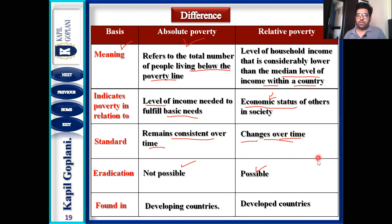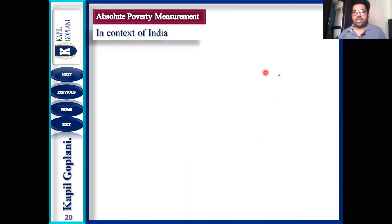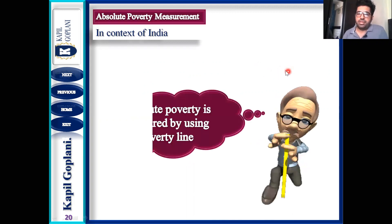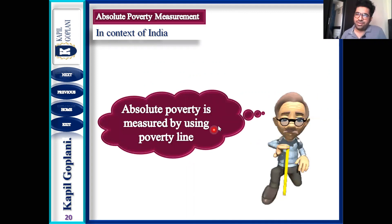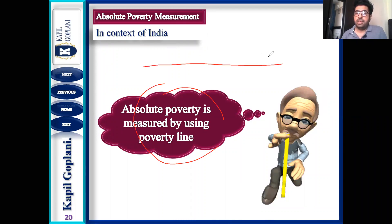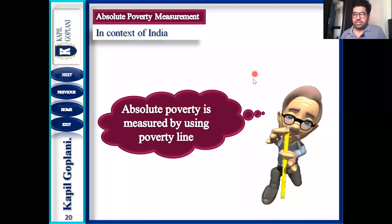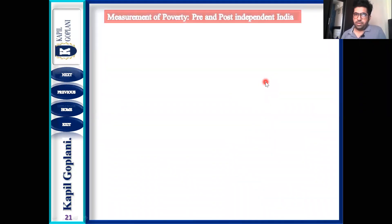Now, absolute poverty measures in the context of India. Absolute poverty is measured to draw a poverty line — to know which person is below the poverty line and which is above. The basis for drawing this line will be understood now. Let us see how we draw the poverty line to determine who is poor and who is non-poor, both pre and post-independence.